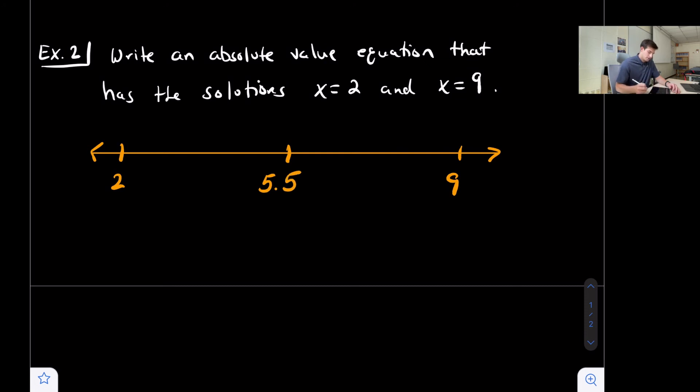So we have x minus the middle number, x minus 5.5, equals the distance that the two solutions are from the middle. Each of those would be 3.5 or three and a half units away from the middle.